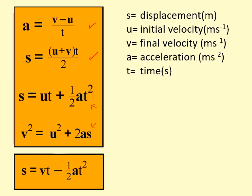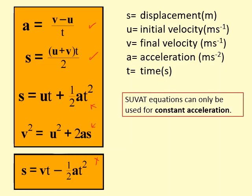The fifth one isn't that important and we don't use it very often so you don't need to remember that one. The SUVAT equations should only be used when the object is moving at constant acceleration. For example, if it's free falling or if the speed is increasing at a constant rate.